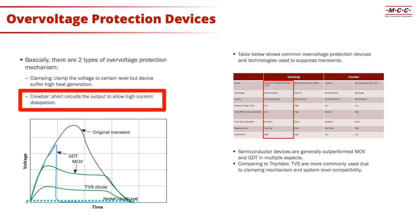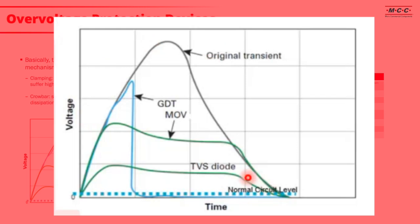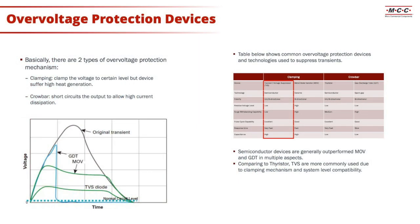For crowbar protection, the device acts like a short-circuit switch with very low conducting voltage, enabling it to divert huge transient current with lower power dissipation. This graph shows the behavior of three types of overvoltage protection devices: the gas discharge tube (GDT), metal oxide varistor (MOV), and the transient voltage suppressor TVS. As you'll notice, when there is a voltage transient event, TVS has the lowest clamping voltage or residual voltage compared to MOV.